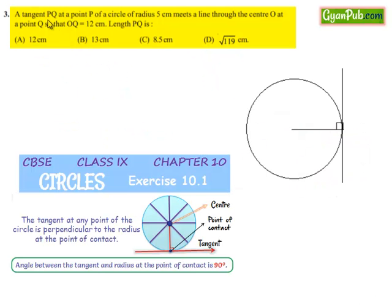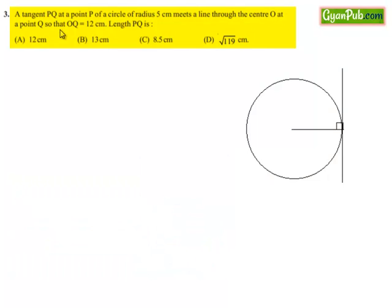Moving on to the third question: a tangent PQ at point P of a circle of radius 5 cm meets a line through center O at point Q so that OQ is equal to 12 cm. Find the length PQ.